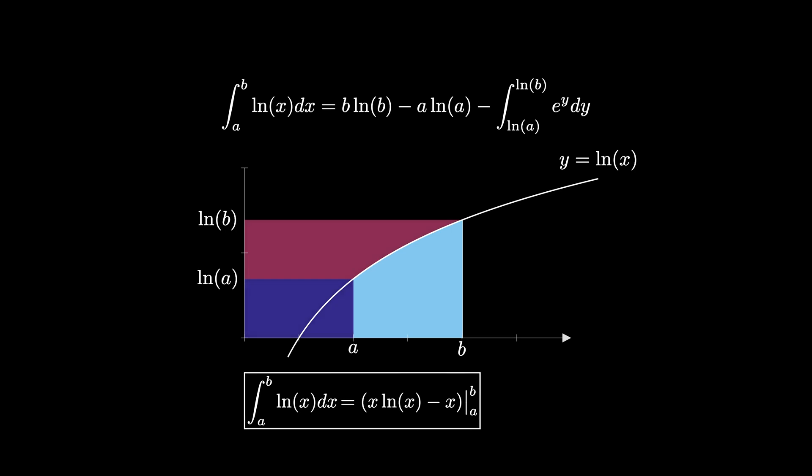In addition to finding the desired area visually, this diagram has also uncovered the interesting fact that an antiderivative of the natural log of x is x times the natural log of x minus x.